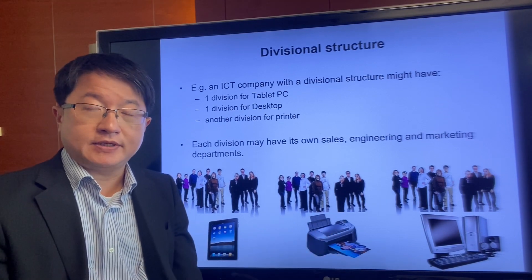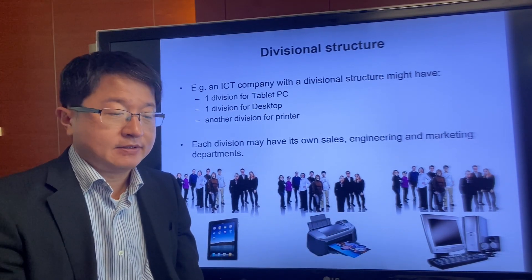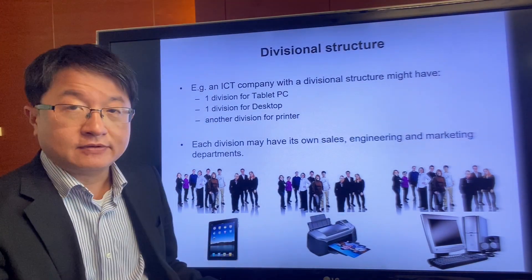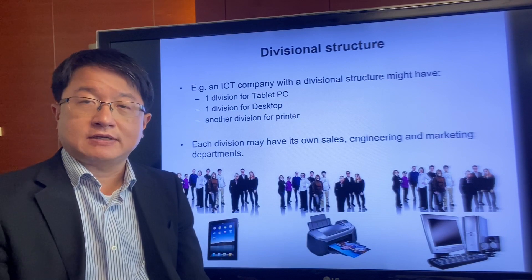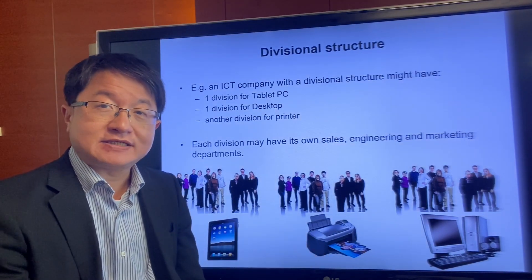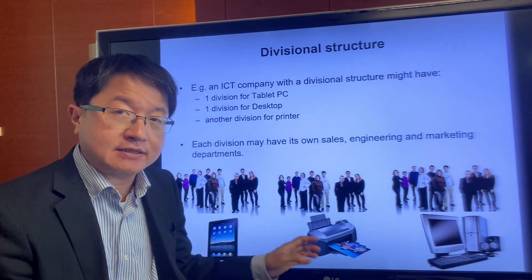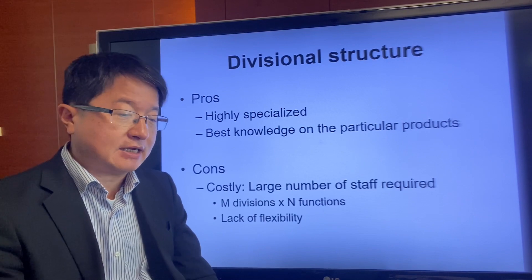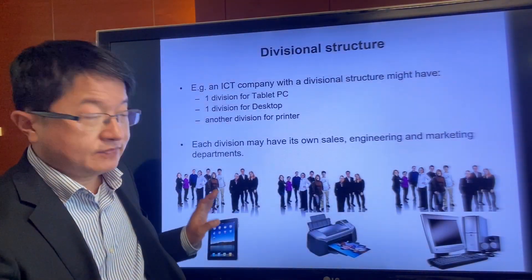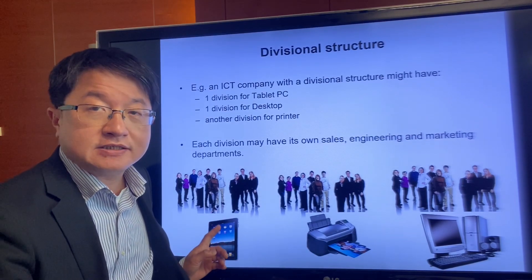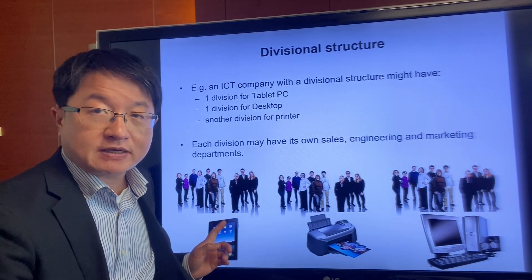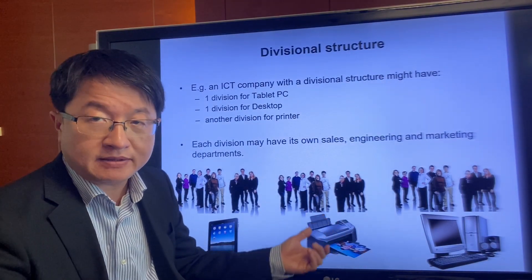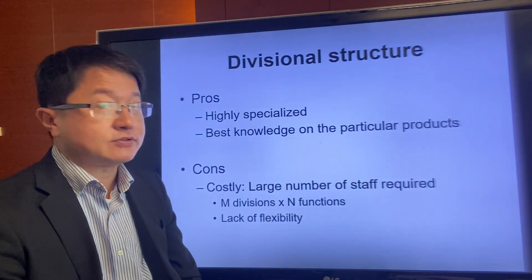Large IT product companies like HPE or IBM divide the company into divisions according to product lines — one for iPad, another for printers, another for desktops. Each division has its own sales staff, engineers, marketing, and accountants, so each unit looks like a small company. The advantage is that each division is highly specialized. The iPad team knows best about tablet PC functionalities, marketing, and structures, while the printer team knows best about inkjet, laser, and maintenance.